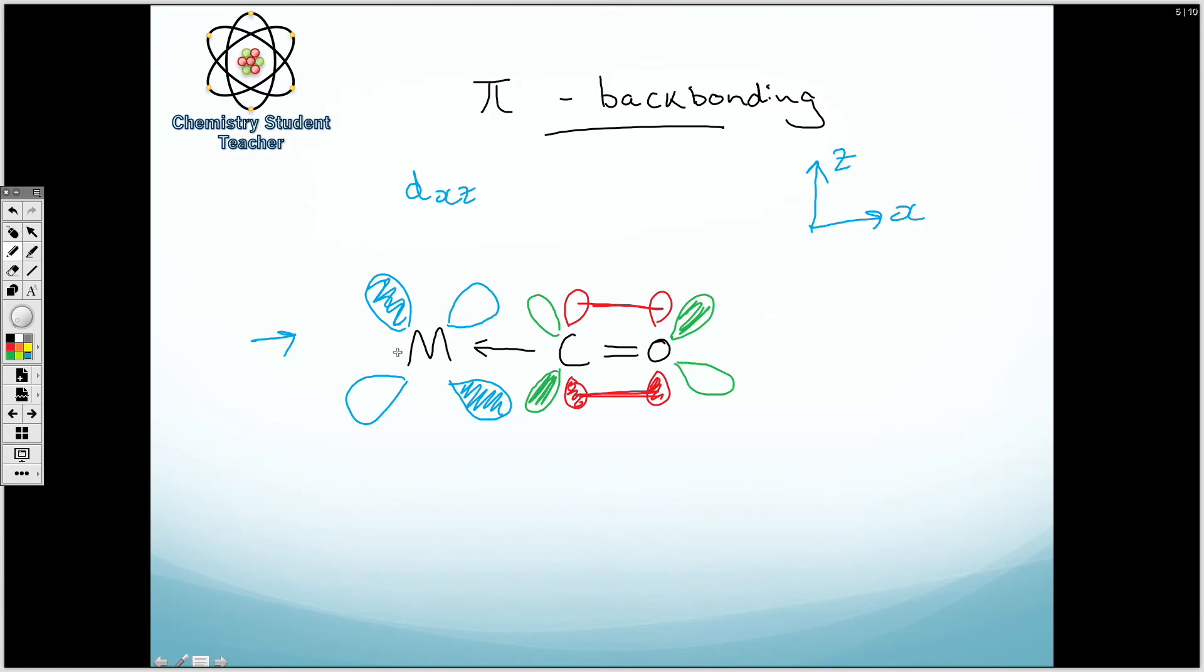You've got some electron density somewhere in that d orbital. What can happen is this can overlap with the pi star antibonding orbital and give some of the electron density to the antibonding orbital.